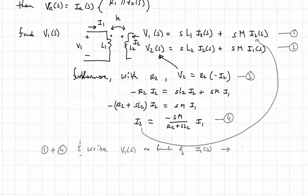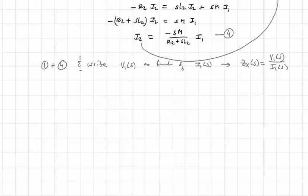And now we can write ZX of S is going to be equal to V1 of S over I1 of S. And after some algebra we can find that ZX of S equal to V1 over I1 is equal to SL1 minus S squared M squared over R2 plus SL2.